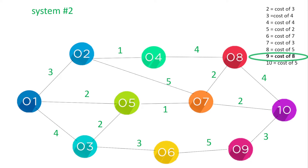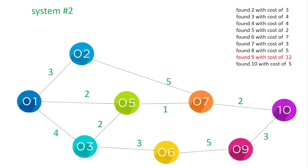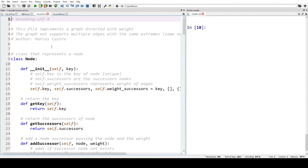Now for system two. We go back to our original graph. The correct answer going from node one to node nine had a cost of eight, but we found a problem with the stopping mechanism that actually found a cost of twelve.